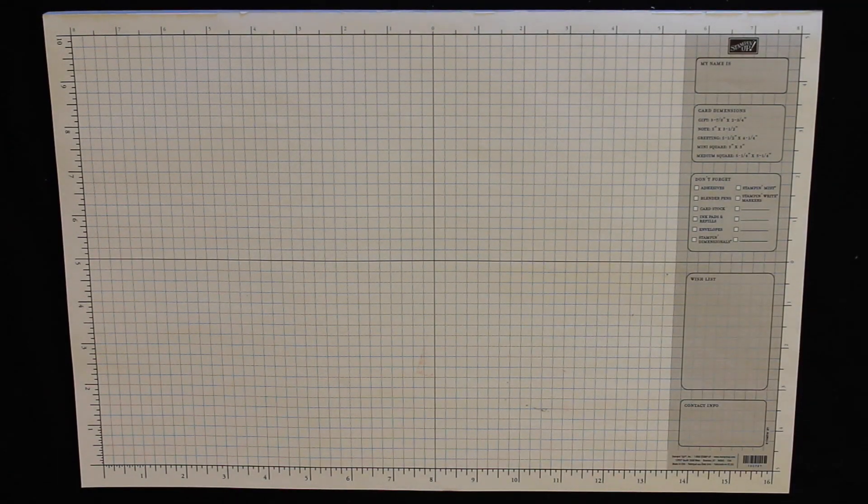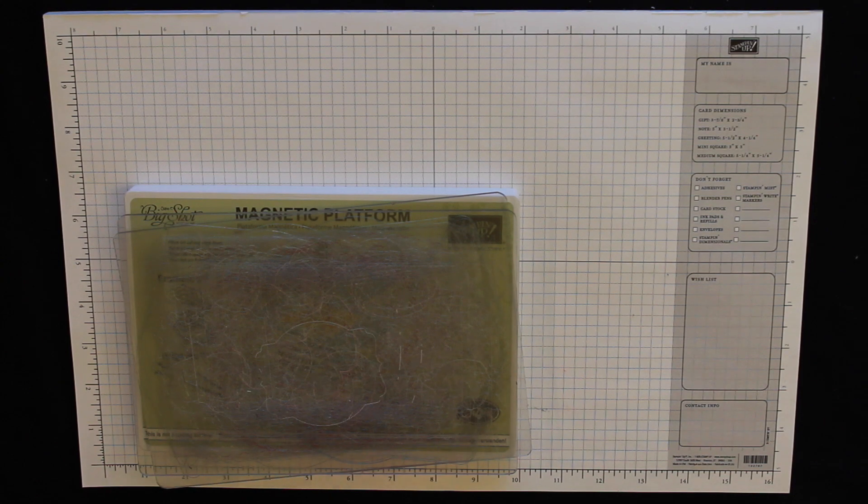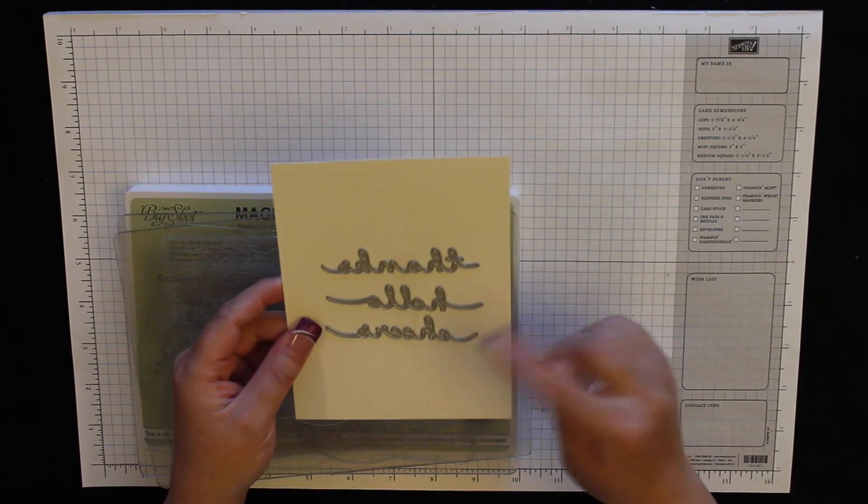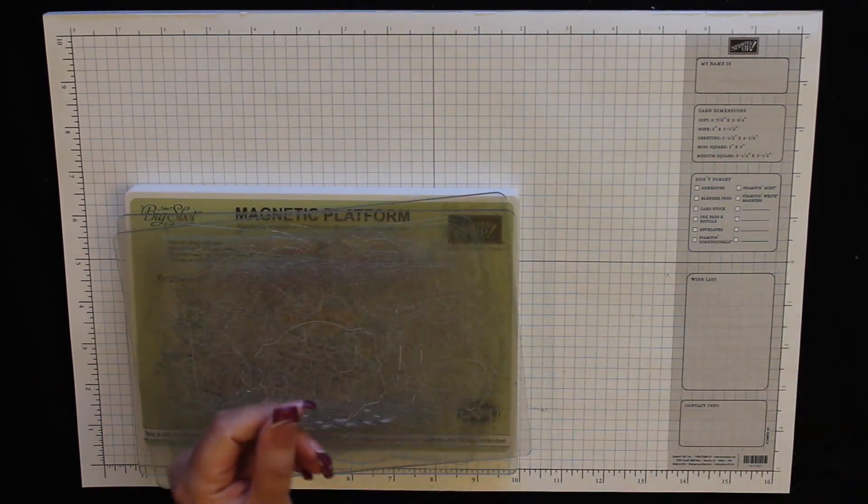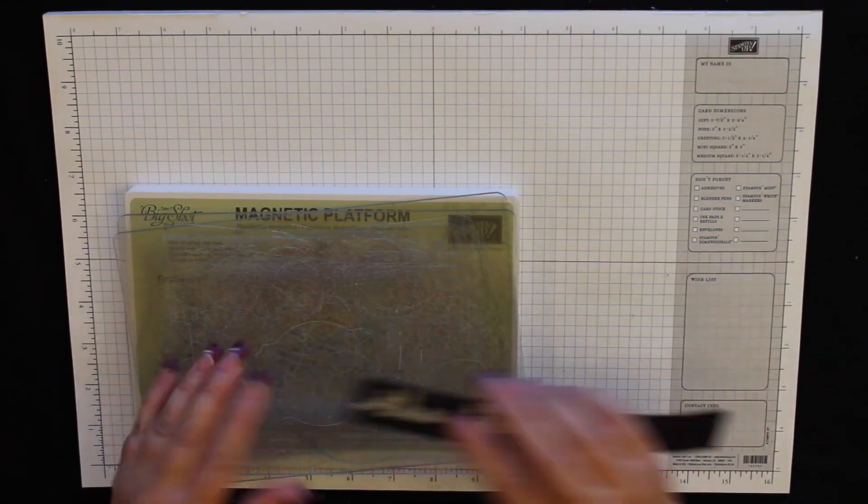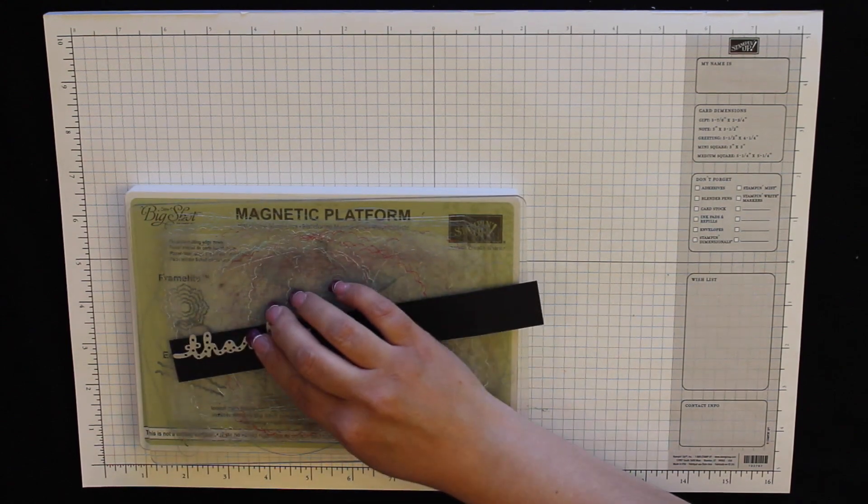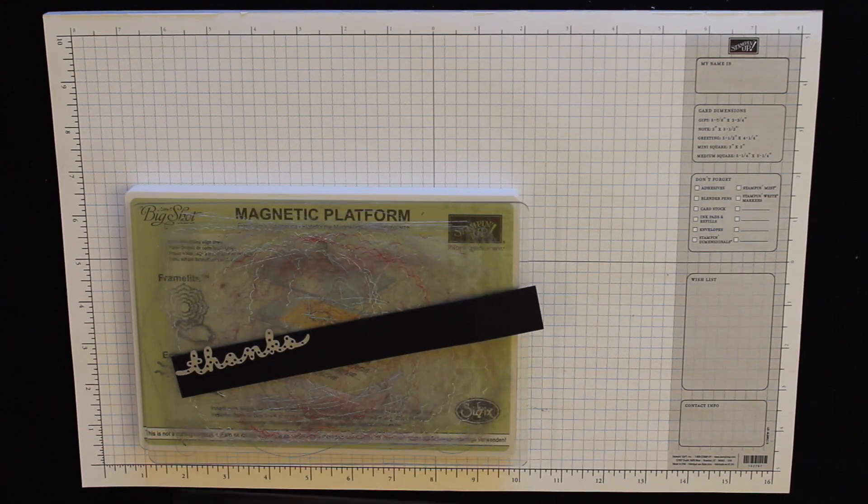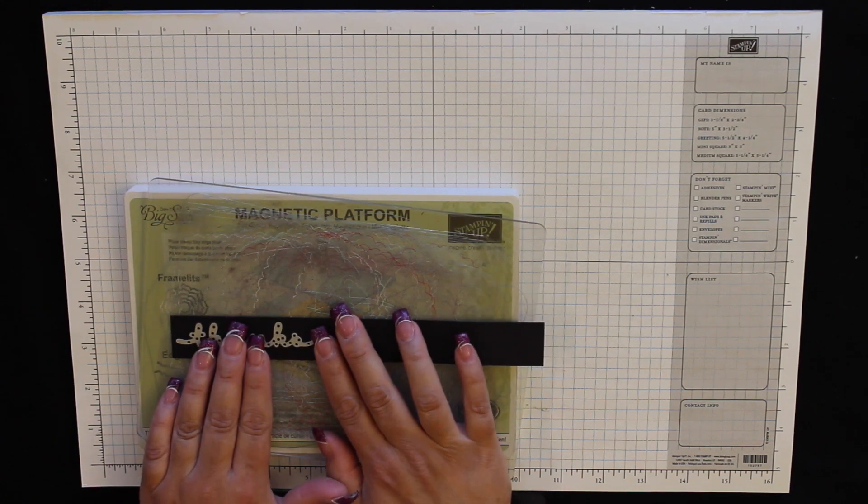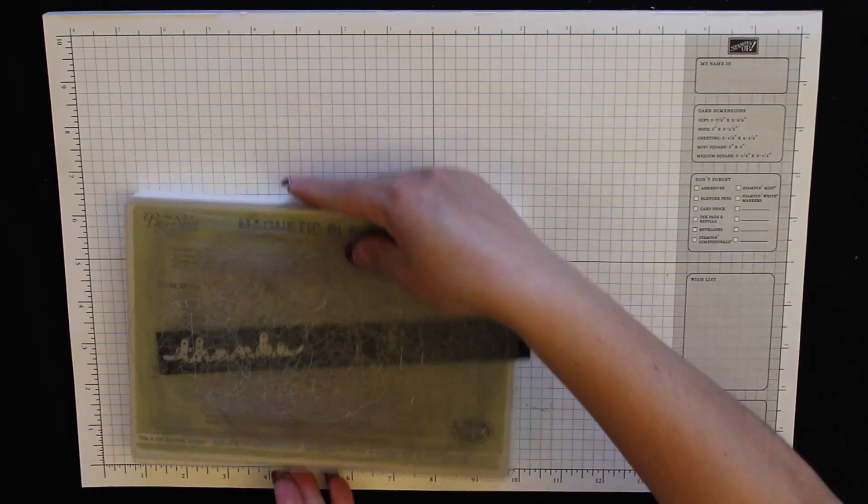The next thing we want to do is we want to cut out the little thanks that we use. And that comes from the Greetings Thinlits. It comes with thanks, hello, and cheers. We want to use the thanks. And I have just a strip of black cardstock. I have my magnetic platform, my plastic cutting pad. I'm going to set that down right there, put this on top and I'm going to run this through the Big Shot.